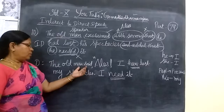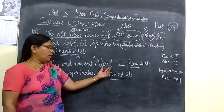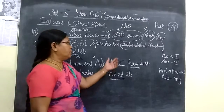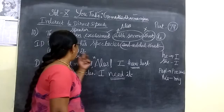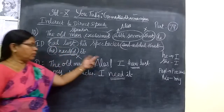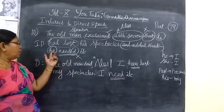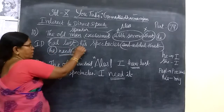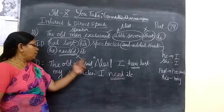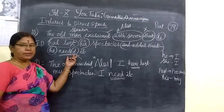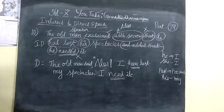So 'exclaimed' is written, then with sorrow the word is 'Alas'. Then 'he' will be written as 'I'. 'Had' — past tense is changed into present tense. Then 'his' is changed into 'my'. Then again 'he' will be written as 'I'. It is past tense — past tense is changed into present tense. And we will see one more time.